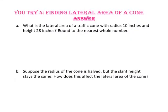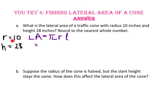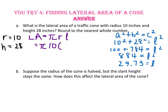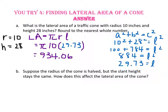Pause the video and do U-try number 4. For part A, what is the lateral area of a traffic cone with radius 10 inches and height 28 inches? Round to the nearest whole number. Starting with pi times radius times slant height, we substitute 10 for the radius but must find the slant height using the Pythagorean theorem with legs 10 and 28. The slant height is approximately 29.73. So 29.73 times 10 times pi is approximately 934 square inches.